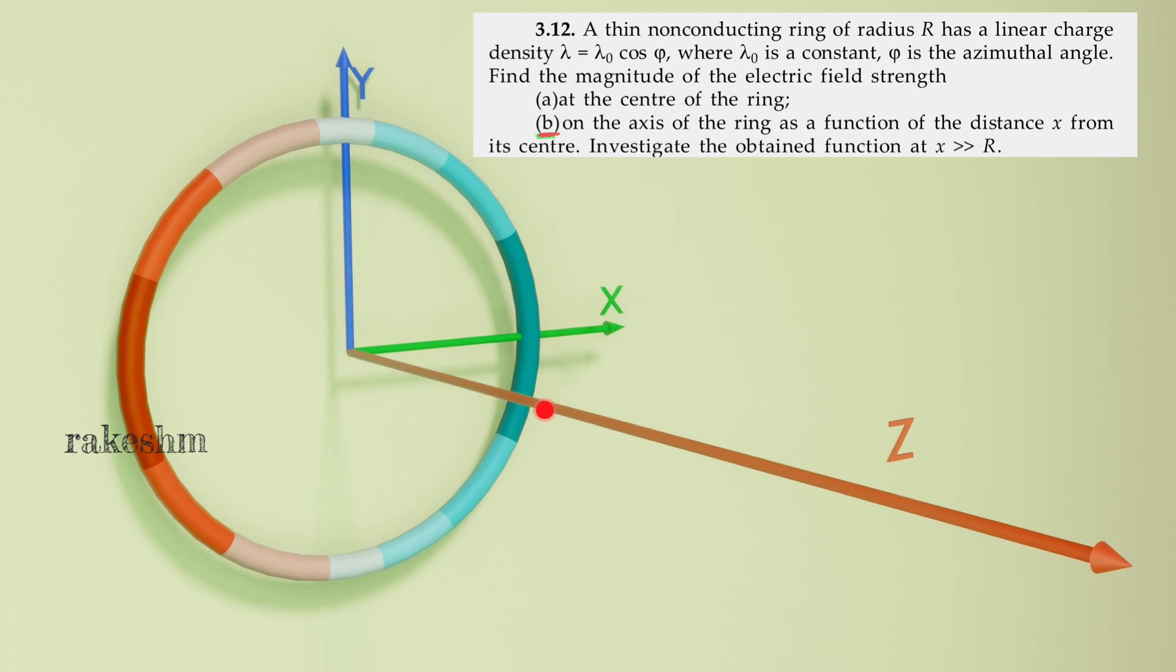Here I have given a blue color to positive charge and a red color to negative charge. Putting phi equal to 0 we get lambda equal to lambda naught. So at phi equal to 0 we have maximum linear charge density.